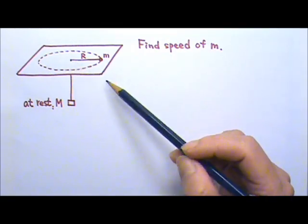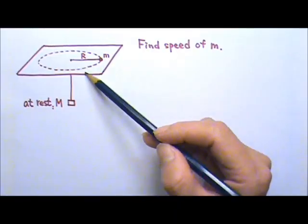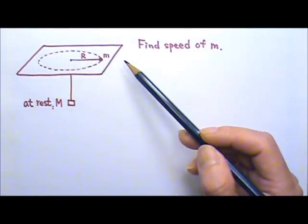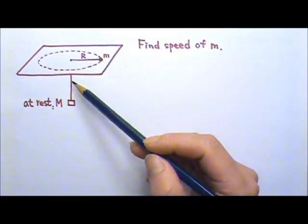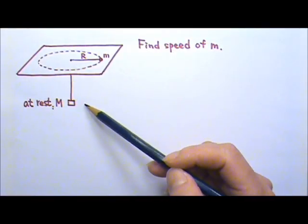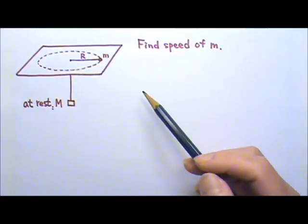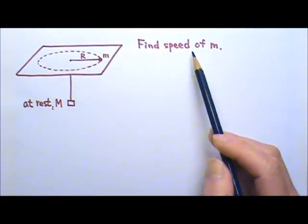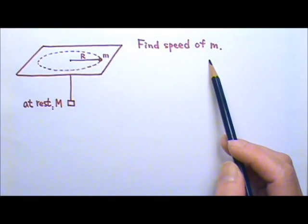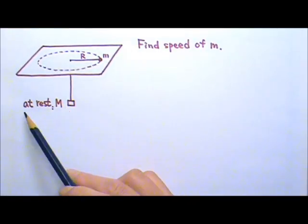So let's say the puck that goes around and does circular motion has a mass of little m. The weight that is hung under has a mass big M. If the radius of the circular motion is big R, what must the speed of the puck be to keep big M at rest?